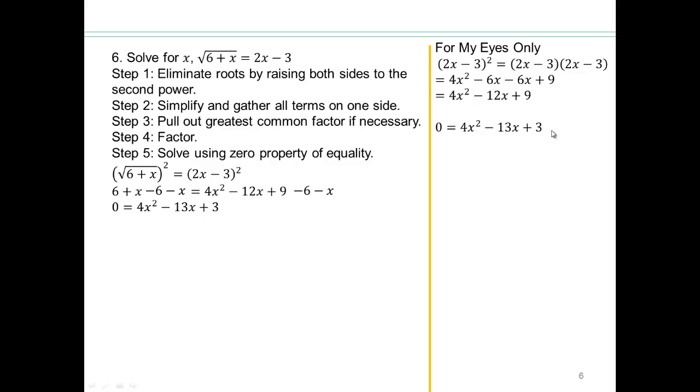4 times 3 is 12. 2 numbers multiplying to give you 12, adding to give you negative 13. So negative 12 and negative 1, right? And then again, go ahead and factor. If you're having trouble factoring, you know what you have to do. Go back and work on factoring. If you don't know how to factor, you cannot do these problems.